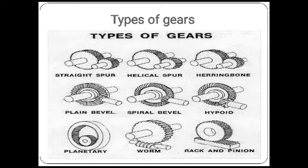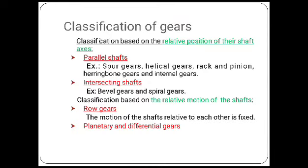We can see the classification of gears. Classification based on the relative position of the shaft: the first is parallel shafts — examples include spur gear, helical gear, rack and pinion, etc. The second is intersecting shafts — examples include spiral gears and bevel gears.